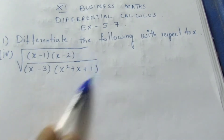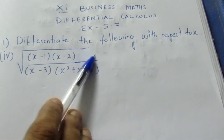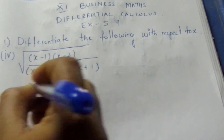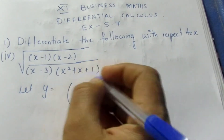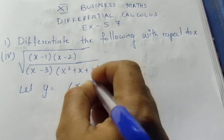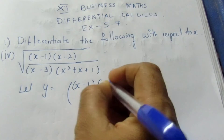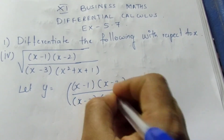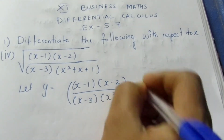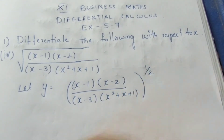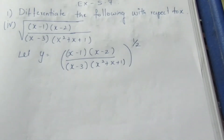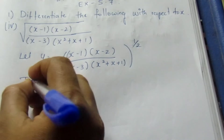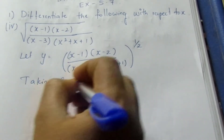Now, if you look at this expression, it involves multiplication and division under a root. So how do we do differentiation? Let y be equal to this value — the root of half power. Since it has multiply and division, taking log on both sides is better.